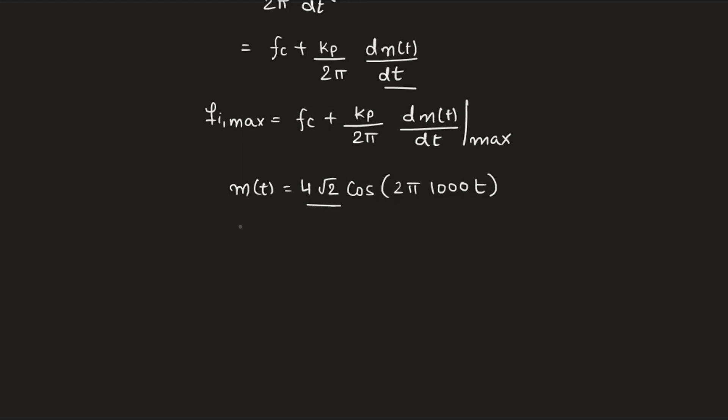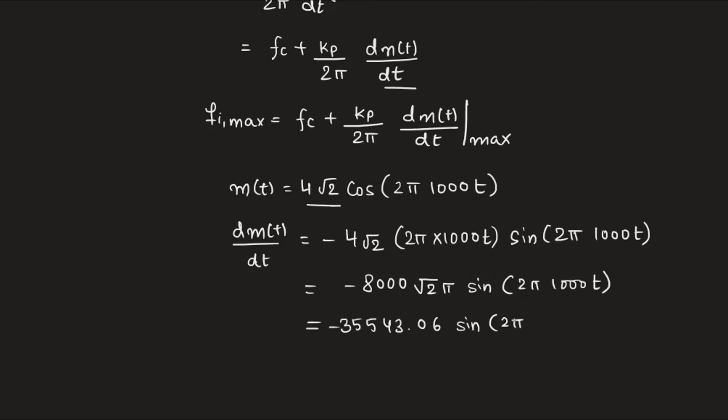Differentiating this message signal with respect to t, we see the maximum value of derivative is achieved when sine theta takes a value of minus 1. So the maximum derivative of the message signal is written as shown.